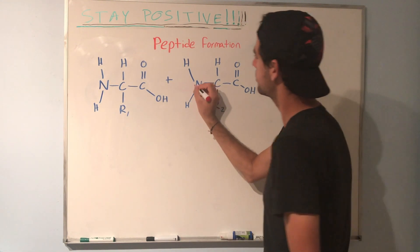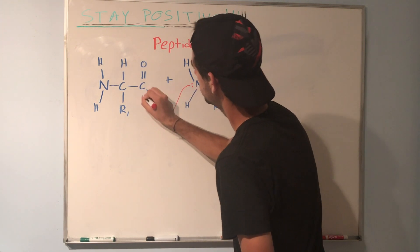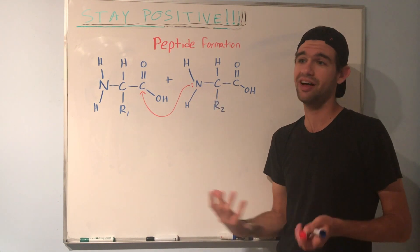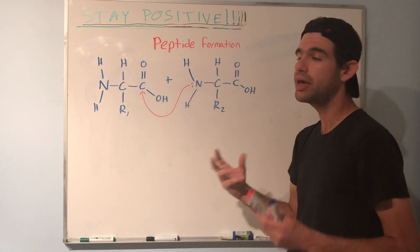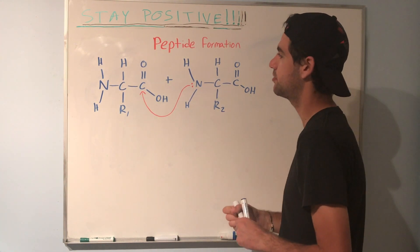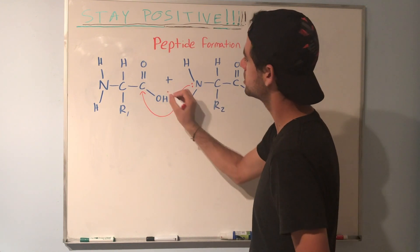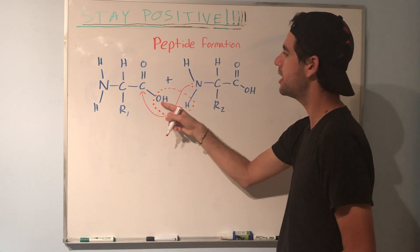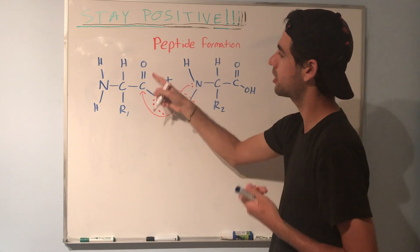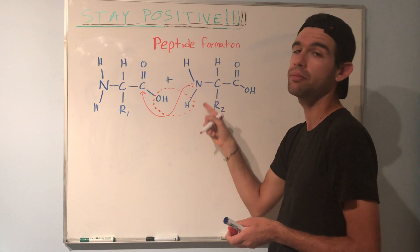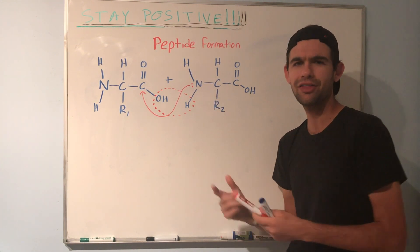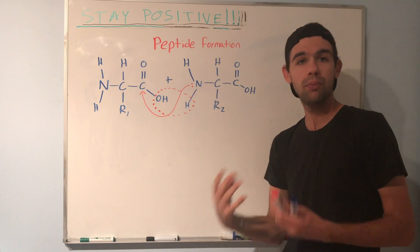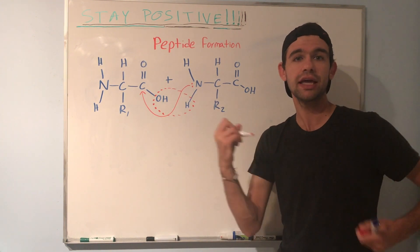Peptide bond formation starts with the nucleophilic nitrogen attacking or bonding to this carbon. The main takeaway, at least for an introductory purpose, is the following: upon that attack, you eventually lose an OH from the carboxyl group and one H from the amino group. OH and H together is H2O — water. So essentially, you lose a water molecule when you form a peptide bond, and that's why we call this type of reaction a condensation reaction.